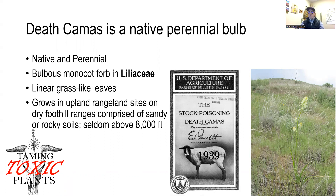In terms of where death camas grows, it's very common on western rangelands, typically in what we would consider dry foothill ranges. These can include a variety of soils, anything from sandy soils to rocky soils. I live in Laramie, Wyoming, so we're at 7,200 feet. It's very common in the foothills to the east of Laramie, Wyoming. It seldom gets much above 8,000 feet in elevation.